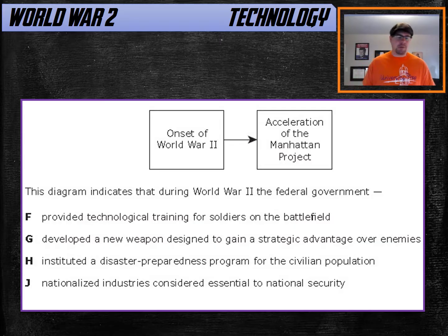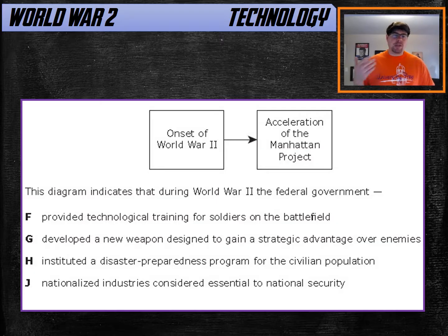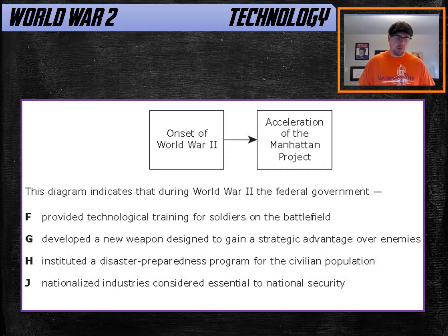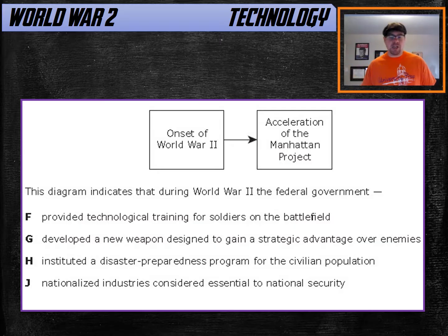The question is: this diagram indicates that during World War Two, the federal government was doing what? This is one of those examples where the test is being very vague — it doesn't come out and say 'atom bomb' in the answer choices or the question. It makes you look for something that basically describes an atom bomb without saying it. The answer choice is G: 'They developed a new weapon designed to gain a strategic advantage over enemies.'